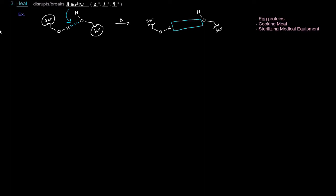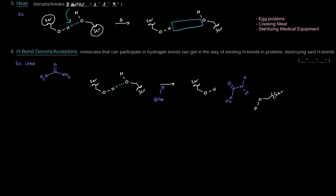Next up, hydrogen bond donors or acceptors. So, these are molecules that can participate in hydrogen bonds and can basically get in the way of existing hydrogen bonds in proteins, and they can end up destroying those hydrogen bonds. Again, we're talking about something that can disrupt hydrogen bonds. So, hydrogen bonds hold together secondary, tertiary, and quaternary structures. So, all those can be disrupted by molecules that can do this.